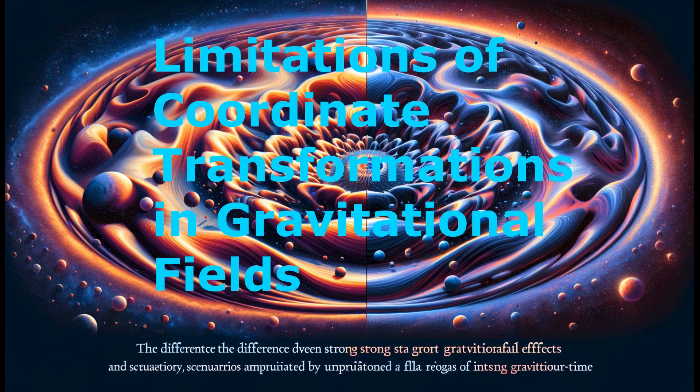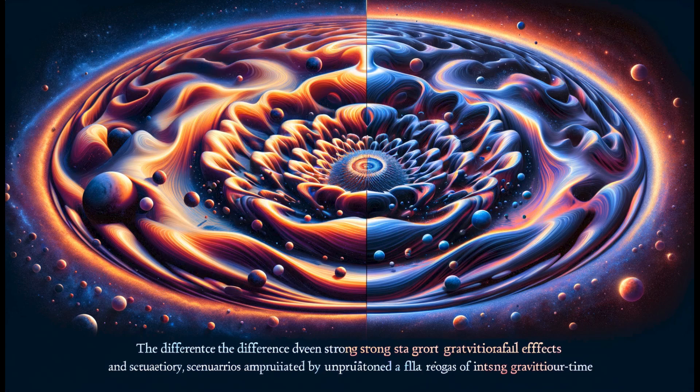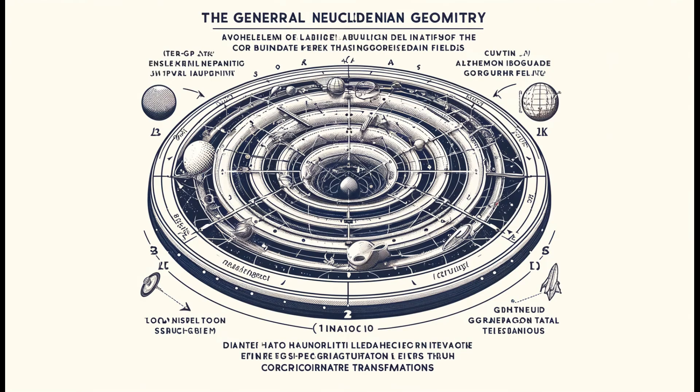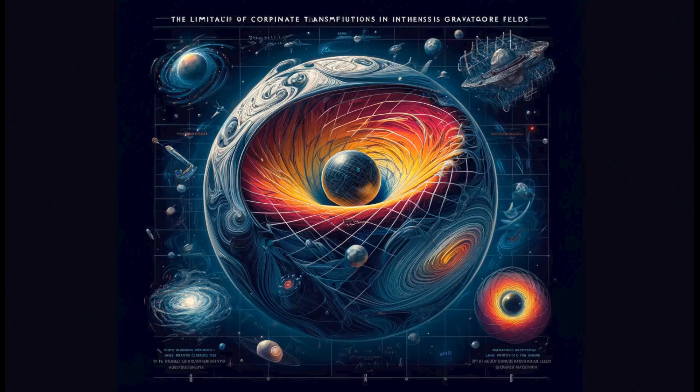We will now consider important aspects of general relativity, particularly the limitations of coordinate transformations in intense gravitational fields and the general spacetime scheme in the framework of Riemannian geometry. In regions of intense gravitational fields, the limitations of coordinate transformations become apparent. In contrast to the Minkowski metric used for flat spacetime in special relativity, real gravitational fields require a more complex treatment.